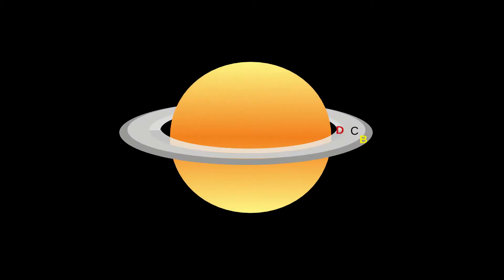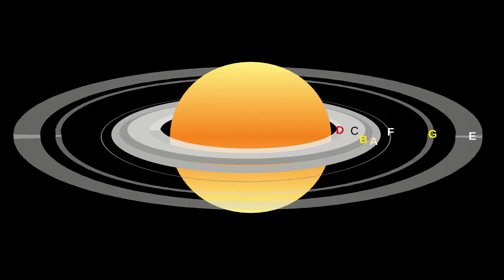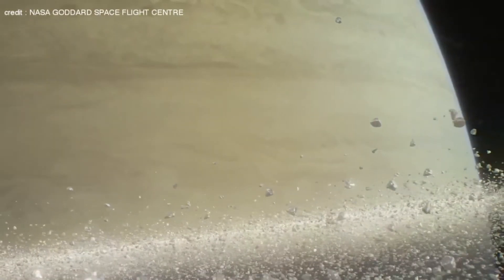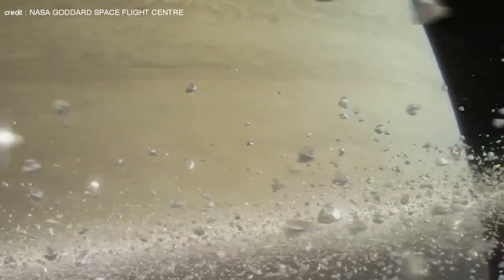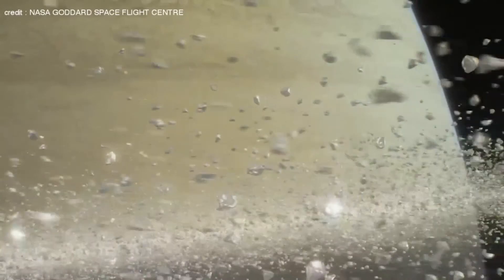Saturn has several rings with gaps between them called divisions. The rings are mostly chunks of water ice ranging in size from microscopic dust grains to boulders several meters in diameter.